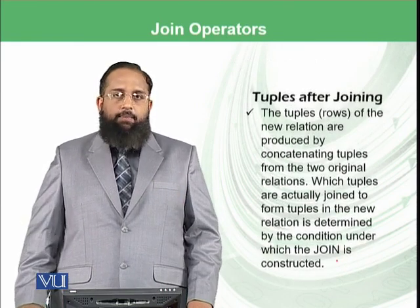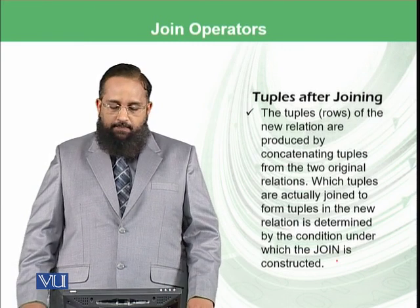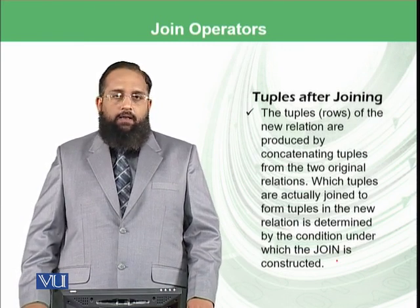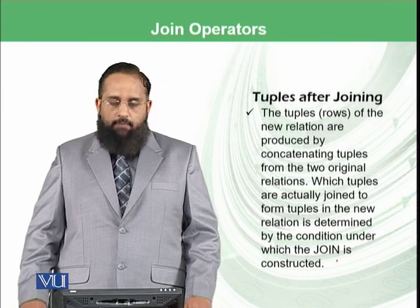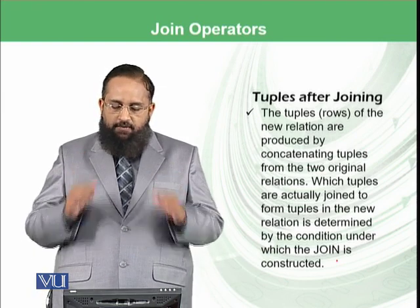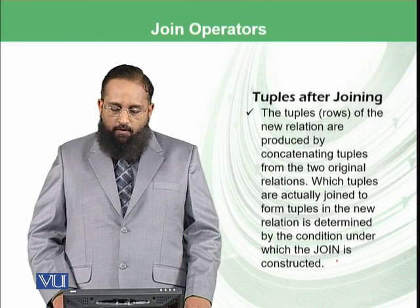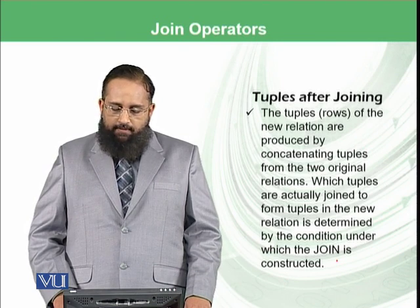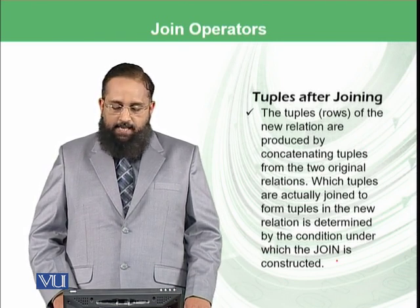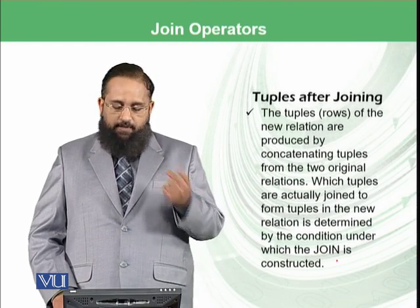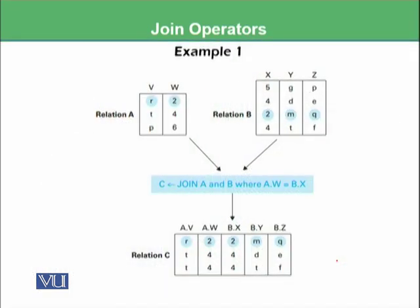So what happens with the tuples? The tuple rows of the new relation are produced by concatenating tuples from the two original relations. Which tuples are actually joined to form tuples in the new relation is determined by the condition under which the join is constructed.